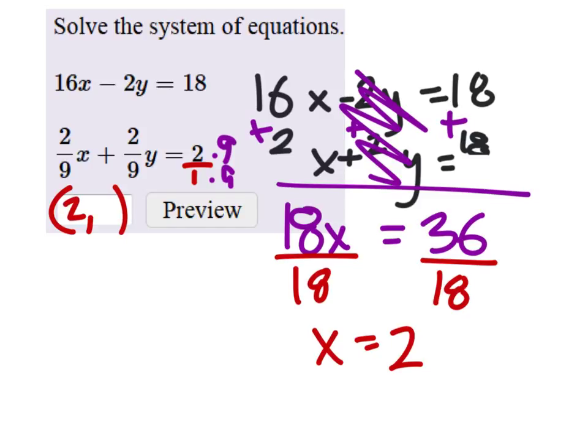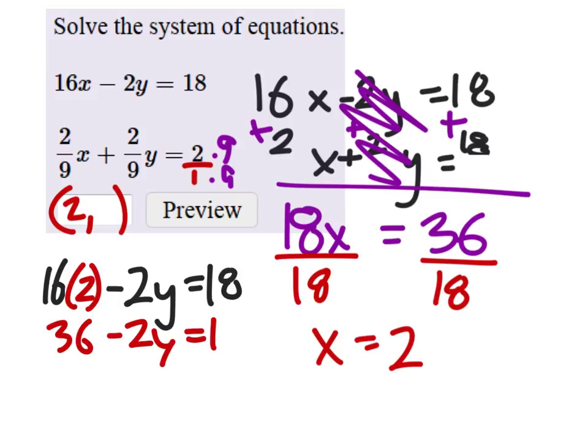Well, I'm going to use the top equation because it still doesn't have any fractions. To solve for y, 16x - 2y = 18. But we'll replace the x with 2. So 36 - 2y = 18.